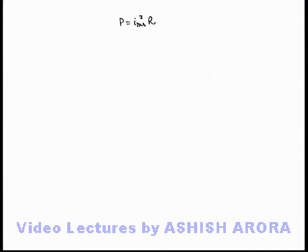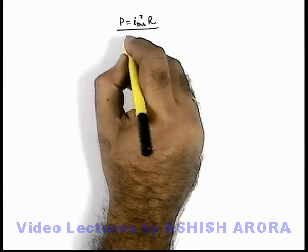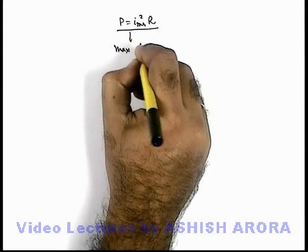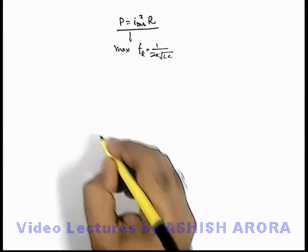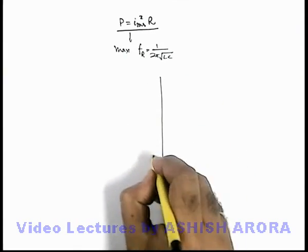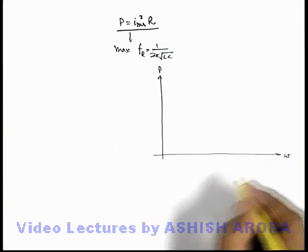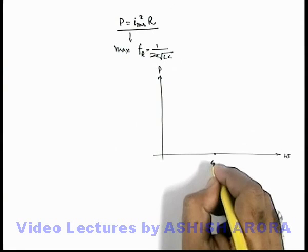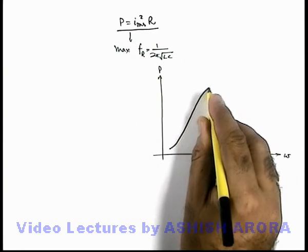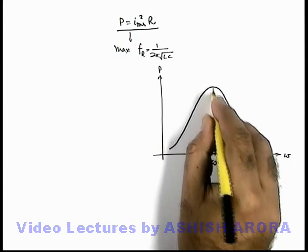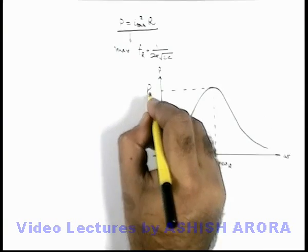As we have just now seen, power in a series RLC circuit is given as I_rms squared times R, and this becomes maximum at resonating frequency which is 1 by 2π times root LC. Now if we draw a variation curve of power with frequency — specifically power versus angular frequency — at omega equals omega_r, the resonating frequency, the value of power becomes maximum, and the curve looks like a peak shape. Again, at resonating frequency the power is maximum.